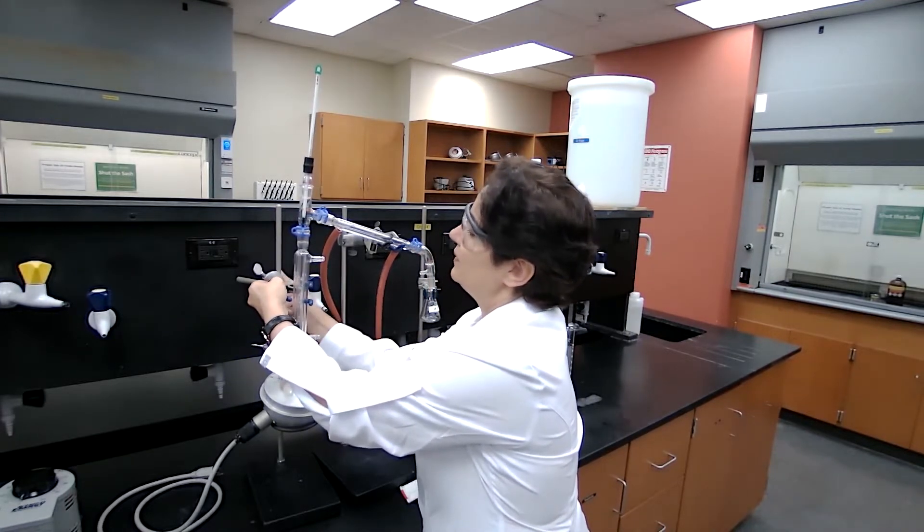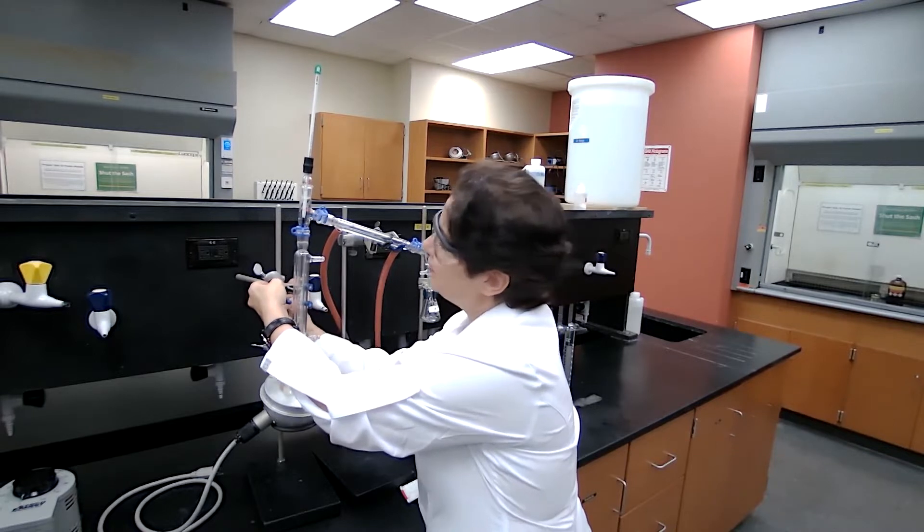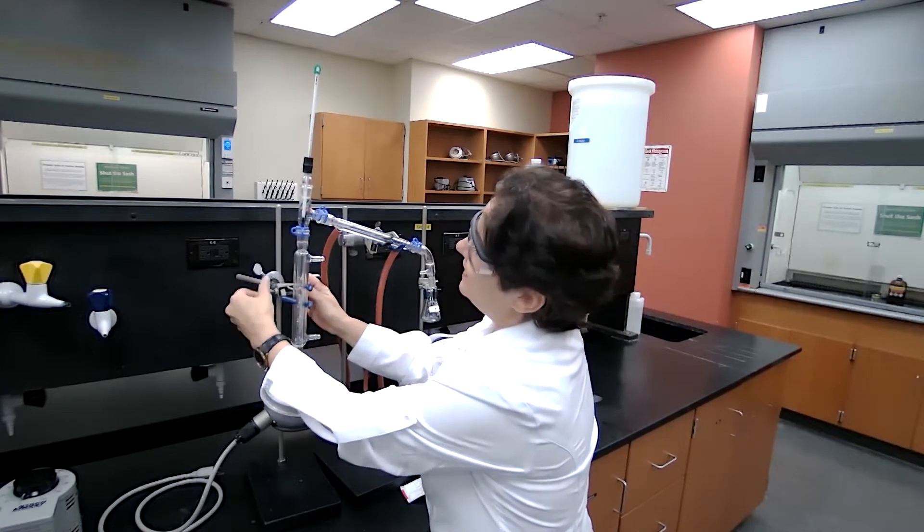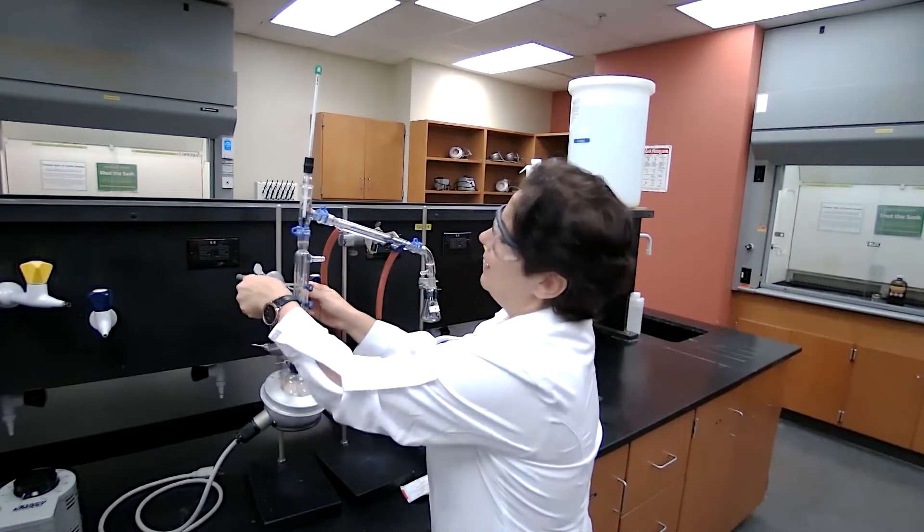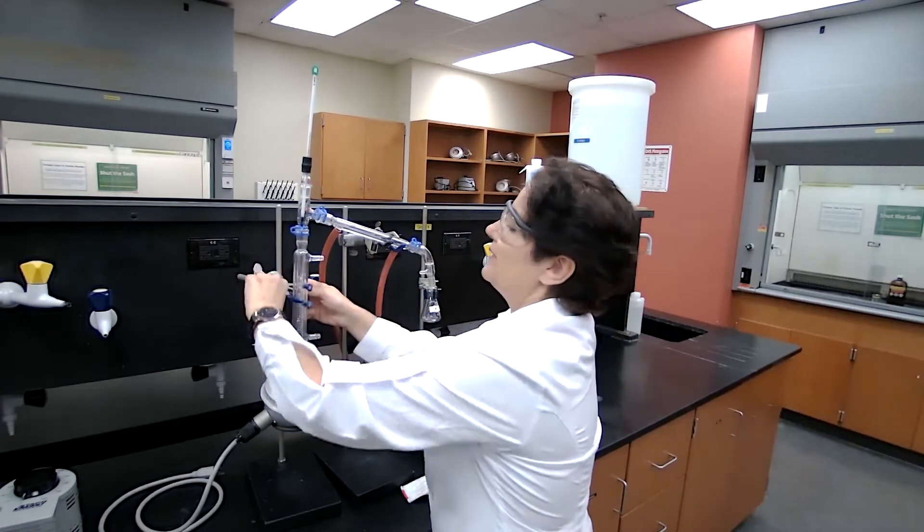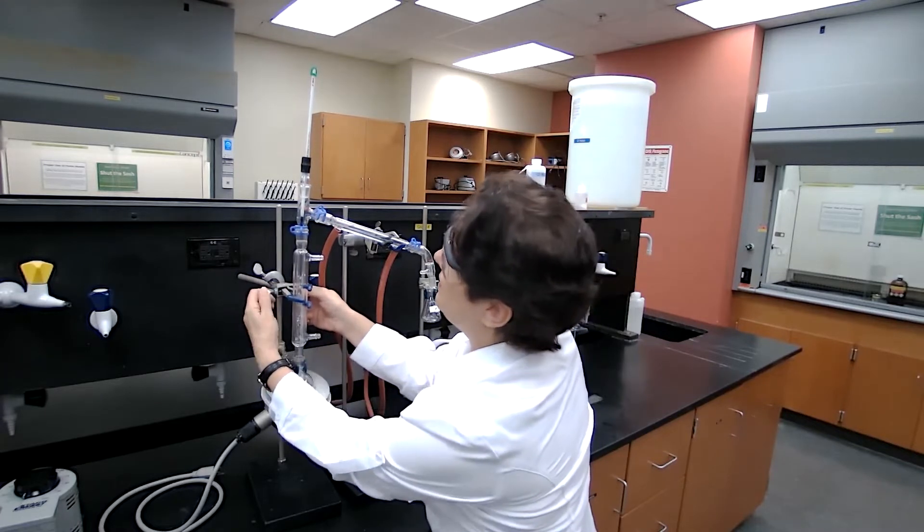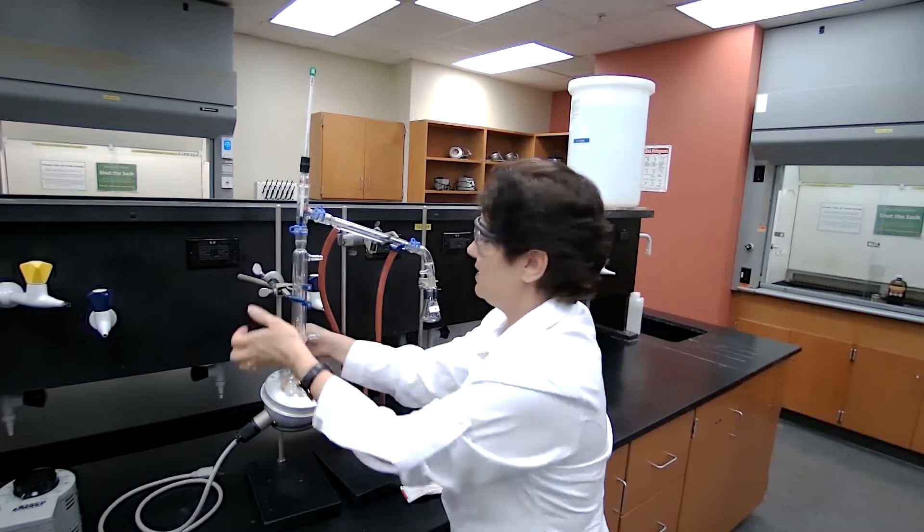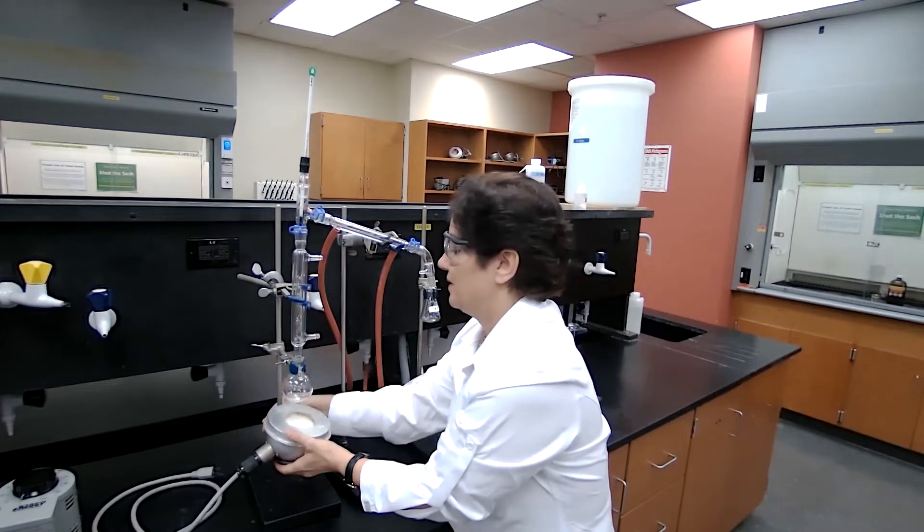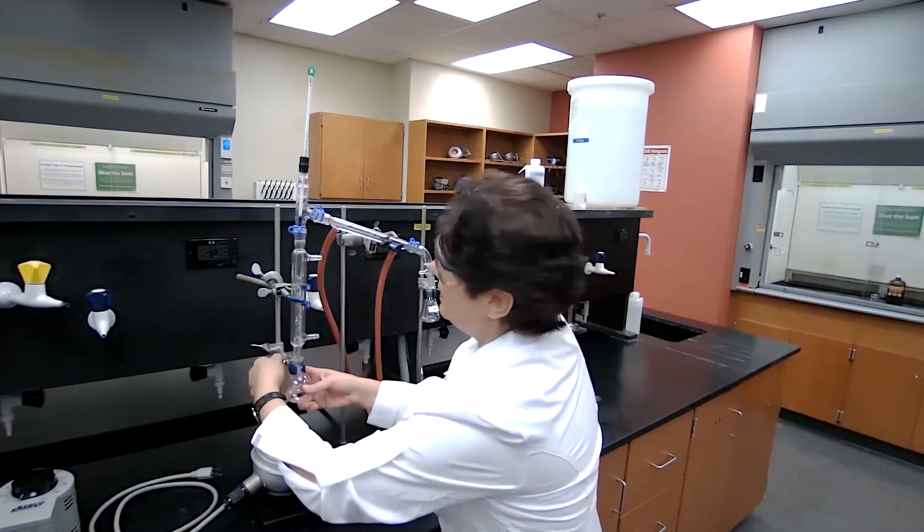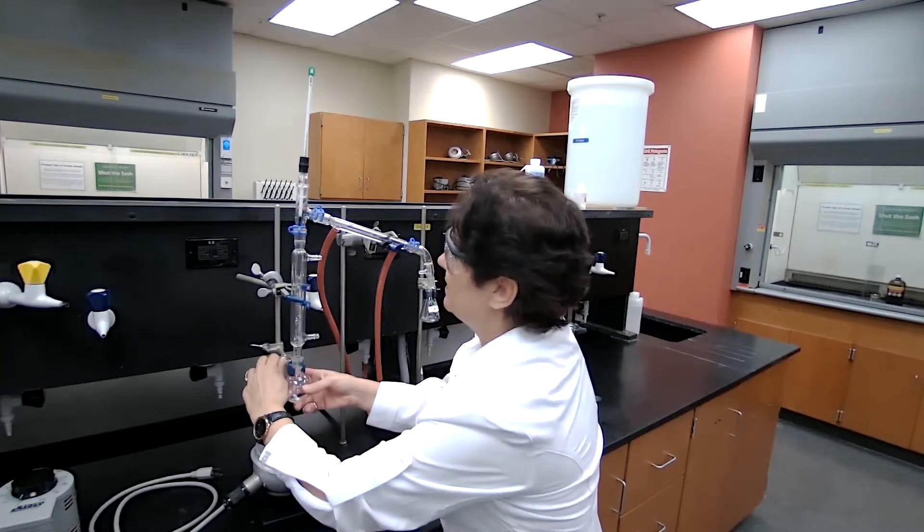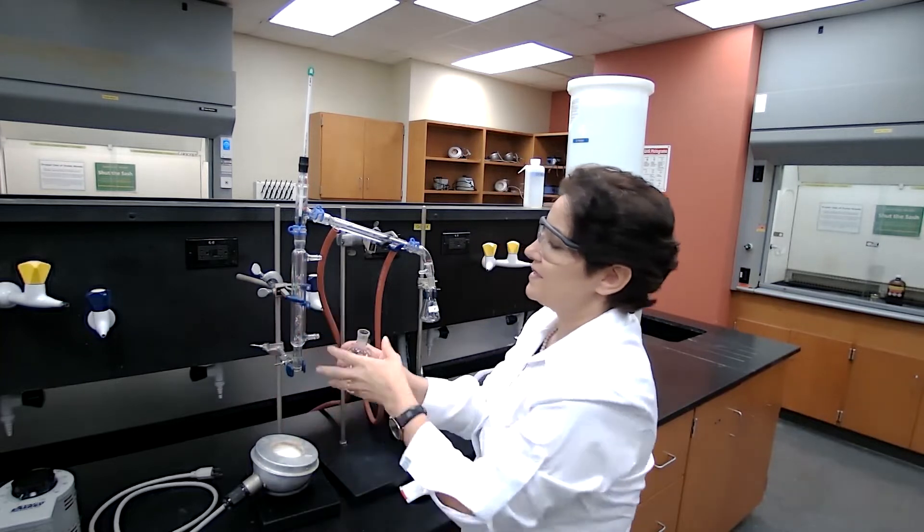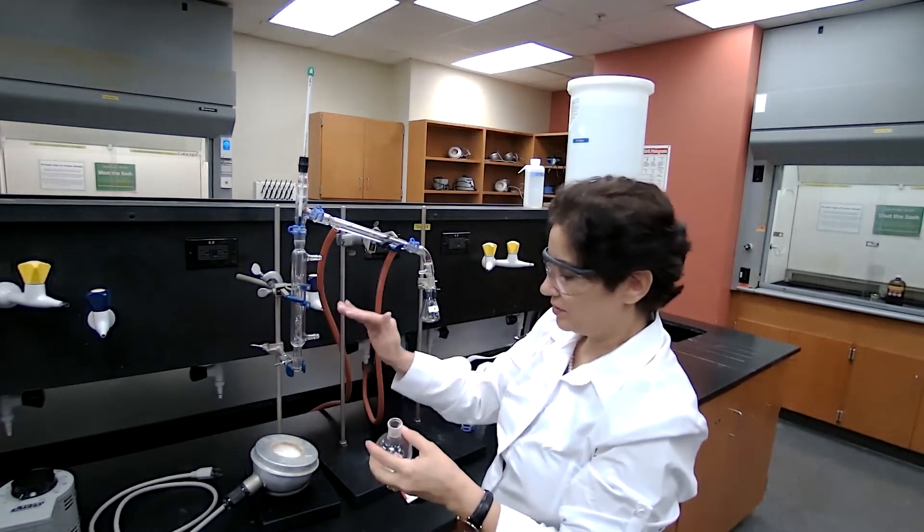We want to make sure this part is secure. So simply use an adjustable three-finger clamp, secure it, and when it is secure, now you can confidently open this part, lower it, and remove the flask. Remove the flask, this is secure already, it's not going to drop.